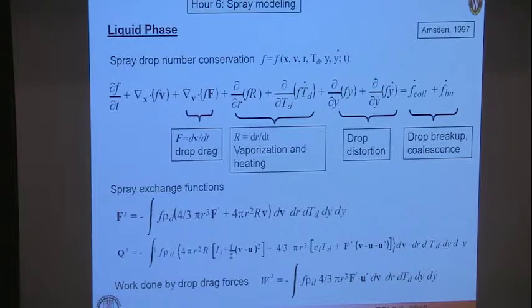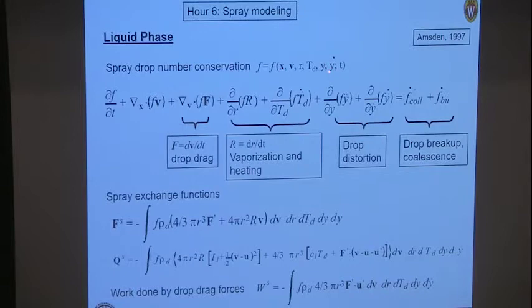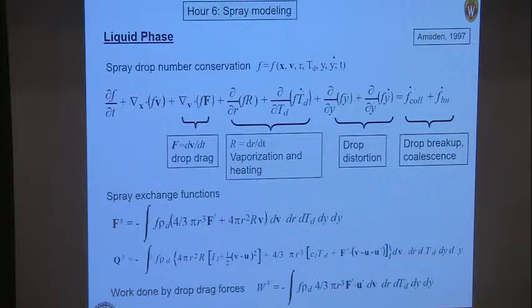How do you track the evolution of this probability density function? I've written it in terms of two additional variables: the drop distortion parameter and its rate of change, because droplets are not all spherical — some are distorted. The conservation equation is basically a hyperbolic equation.